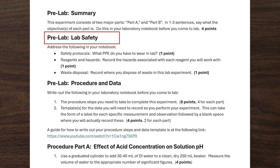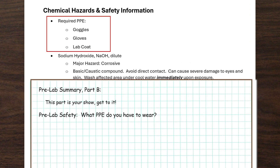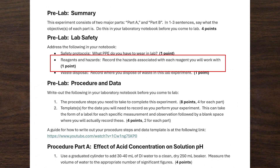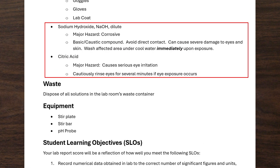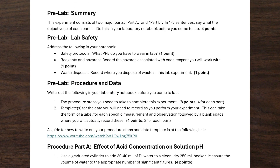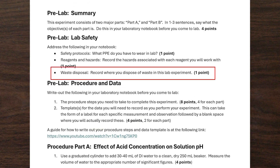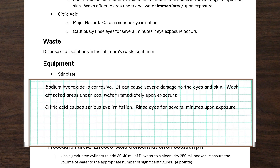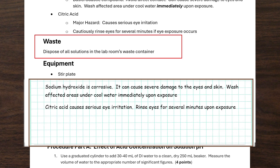Moving right along, the next part of the pre-lab deals with lab safety. First, you have to say what personal protective equipment you need to be wearing, and you know what those are because they're listed right up front in the chemical hazards and safety information. Coming up next are the reagent hazards. You have to list these for everything you're going to be working with, and again you've got those provided at the front of the background and procedure document. You just have to make sure that information is transferred to your lab notebook. The last part of lab safety concerns waste and where you dispose of it, and the part of the document that tells you about that is right here in the waste section.